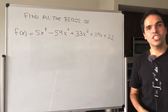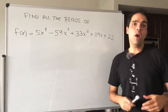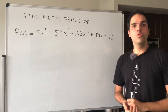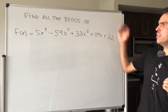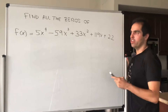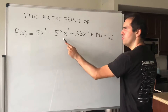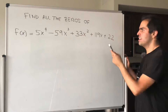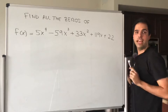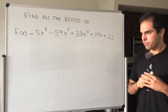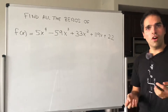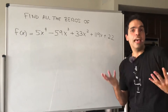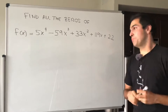Today I want to use the Rational Roots Theorem and Descartes' Rule of Signs to find all the zeros of the following polynomial: 5x to the fourth minus 59x cubed plus 33x squared plus 119x plus 22. First of all, let's try to use the Rational Roots Theorem to guess what the roots might be.